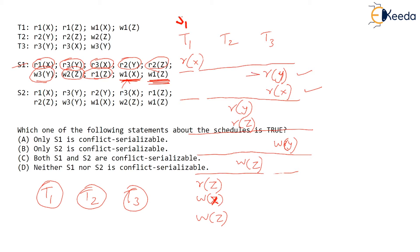The next statement is read Y in T3. Read Y will not conflict with anything because neither T1 nor T2 is writing Y. Remember, a read conflicts only with a write on the same data item. The next instruction is read X in T3, and this will definitely conflict with write X of T1. So there is a conflict edge from T3 to T1.